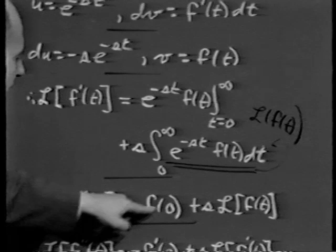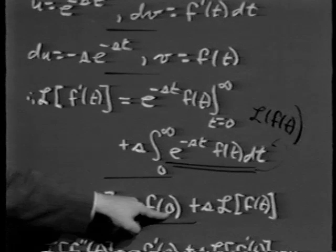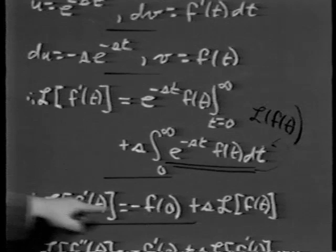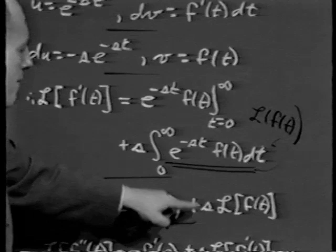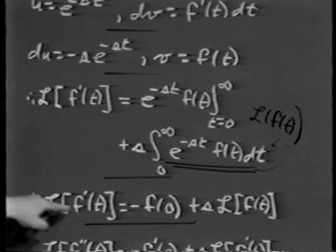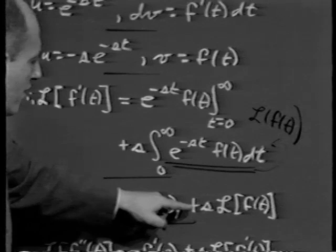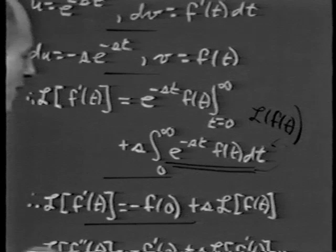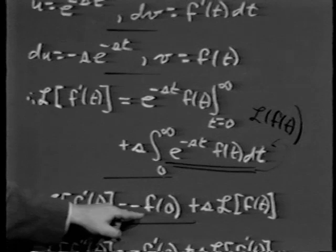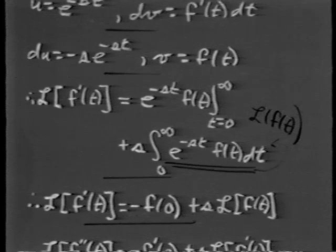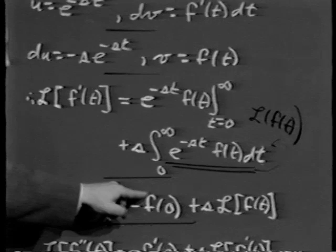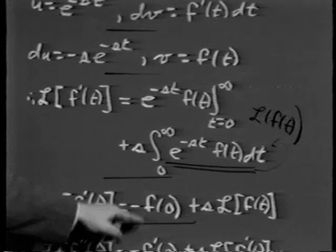If I know f of 0, this says the Laplace transform of f prime of t is a constant plus s times the Laplace transform of f of t itself. I've expressed the Laplace transform of f prime in terms of a polynomial in s and the Laplace transform of f of t. There is nothing sacred about f of 0 specifically — think of f as any function and f prime as its derivative. In particular, I could let f prime play the role of f.